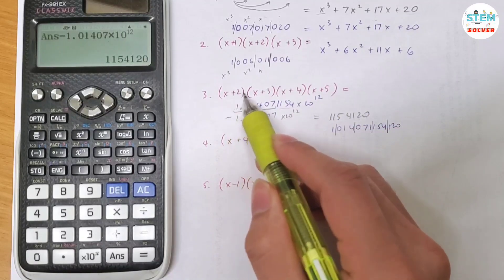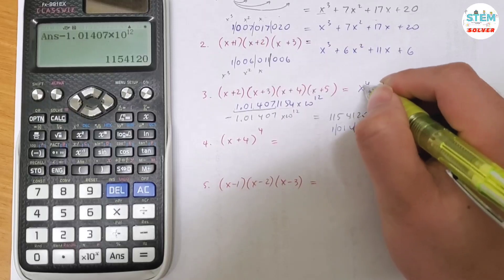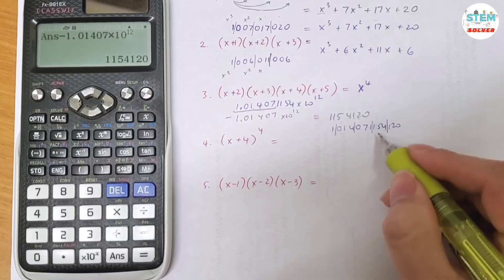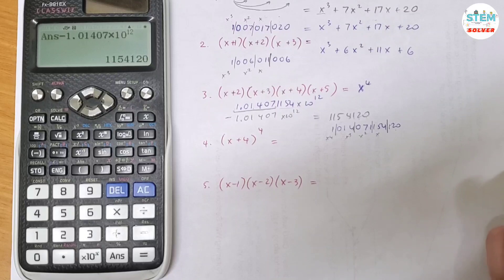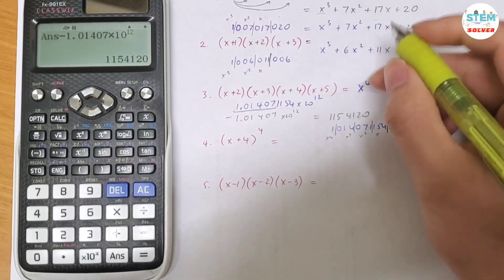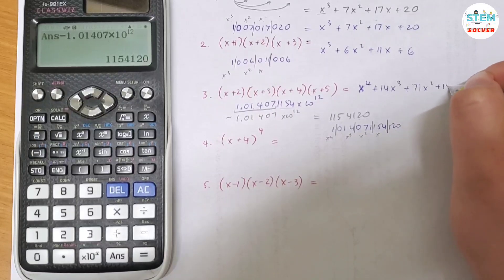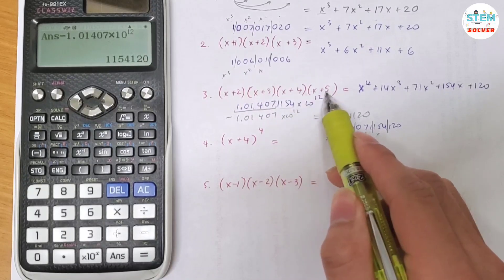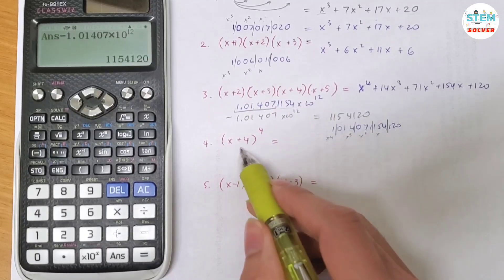Putting it all together I get 1,014,071,154,120. Now divide into groups by 1,000. Since I have 4 factors — x times x times x times x — this is x to the fourth. So: 1 x to the fourth plus 14 x cubed plus 71 x squared plus 154x plus 120. Quick check: 2 times 3 is 6, times 4 is 24, times 5 is 120. Correct!